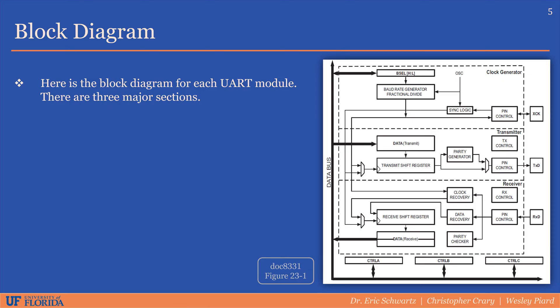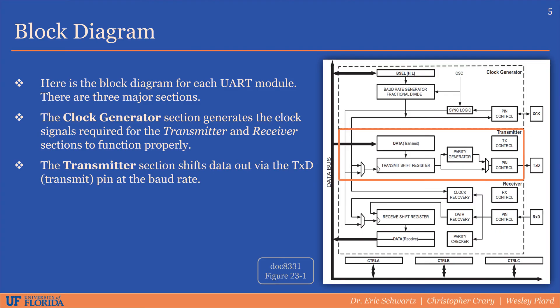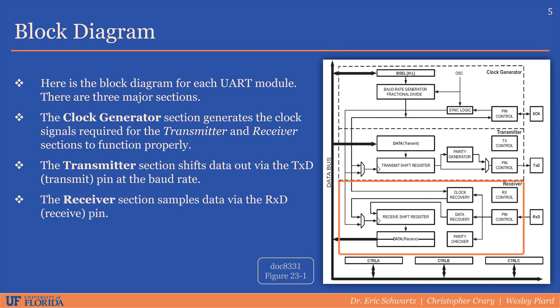Now let's talk about what each UART module looks like. This is a block diagram from the manual for each UART module. There are three major sections. The first section is the clock generator section, which generates the clock signals required for the transmitter and the receiver to function properly. The transmitter section shifts data out via the transmit pin at the specified baud rate, as well as implements the parity. The receiver section samples data via the receive pin.